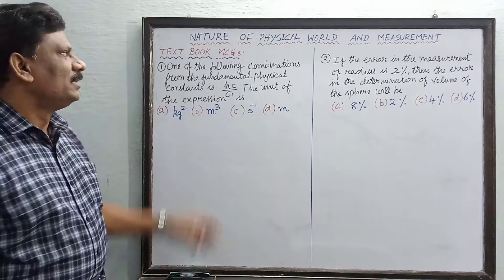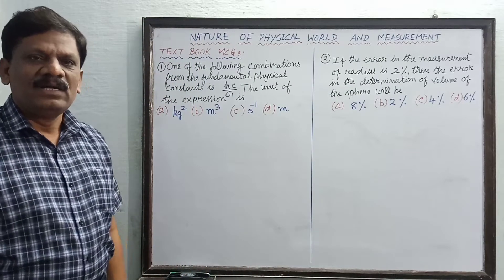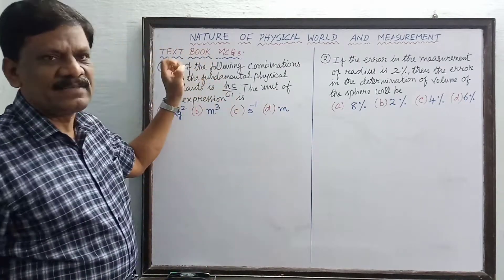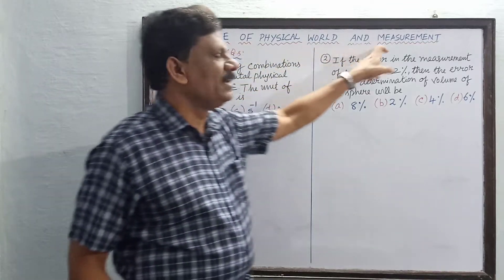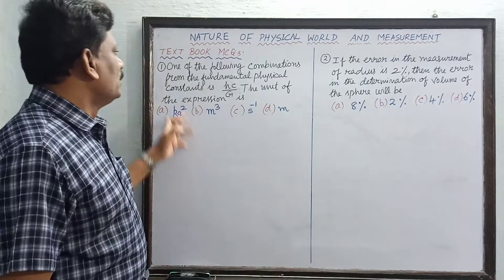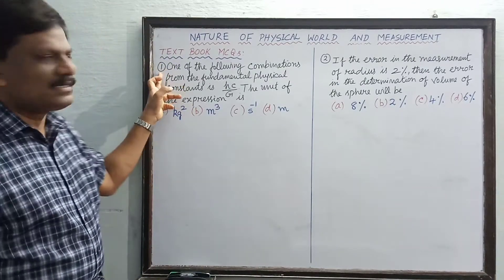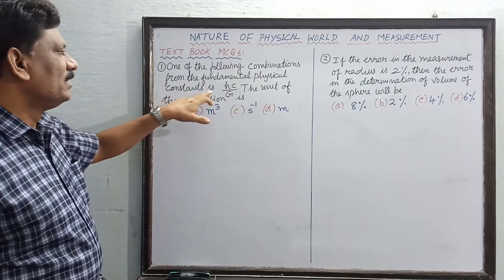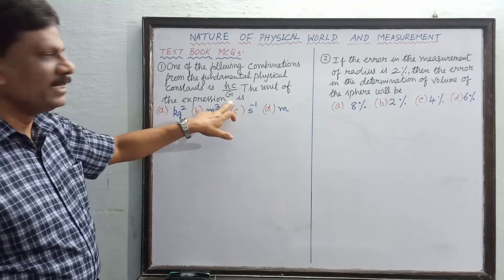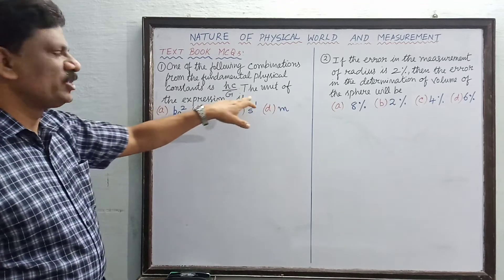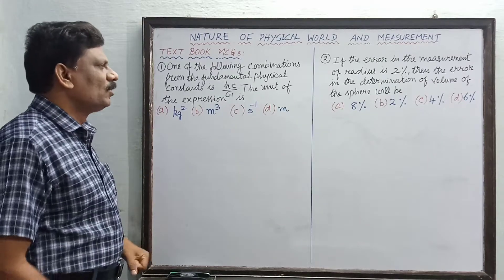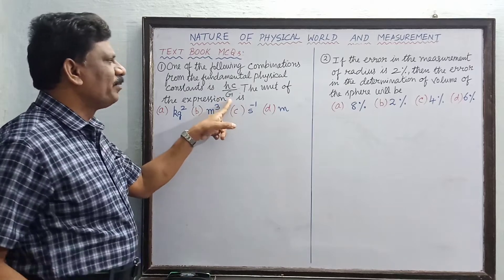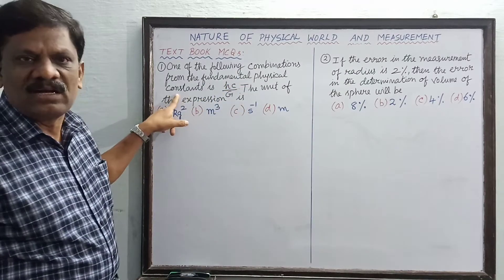Hi students, good morning. We are going to solve all the multiple choice questions given in the textbook exercises, being the first chapter in class 11, namely Nature of Physical World and Measurement. The first question asks: for the combination of fundamental physical constants hc/G, the unit of the expression is to be determined. Here h, c, and G are fundamental physical constants.